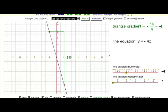In this case, our gradient is minus 16 divided by 4 or minus 4. And so our equation is y equals minus 4x. Once again, the gradient becomes the number which multiplies the x in the equation.